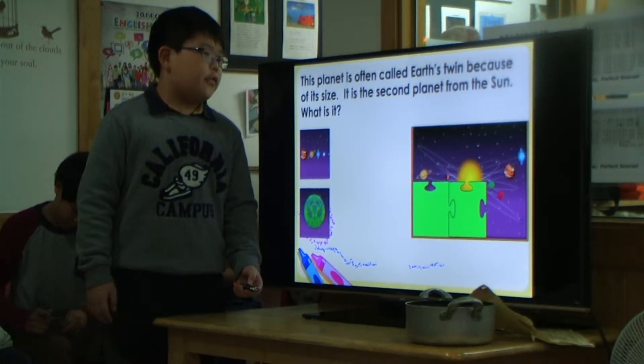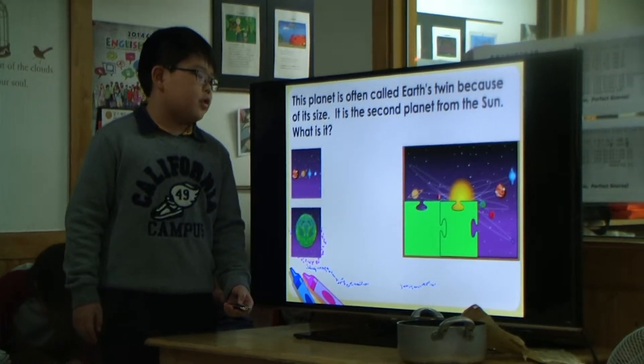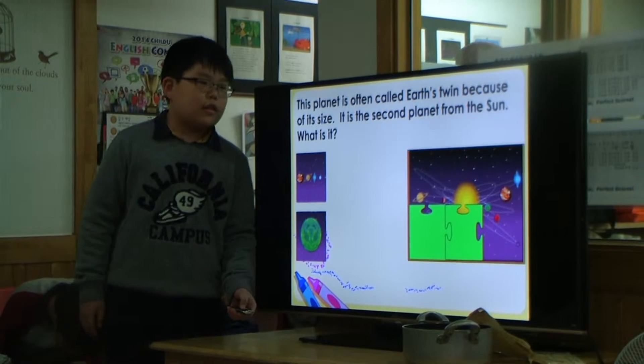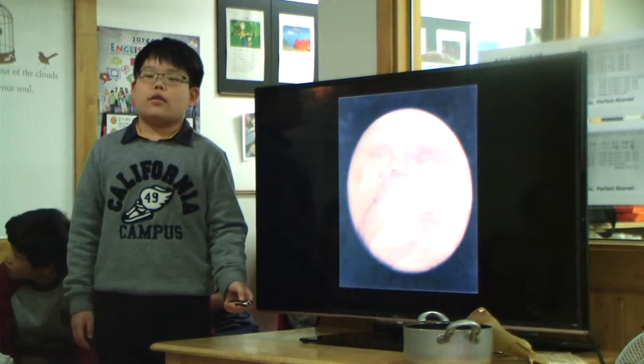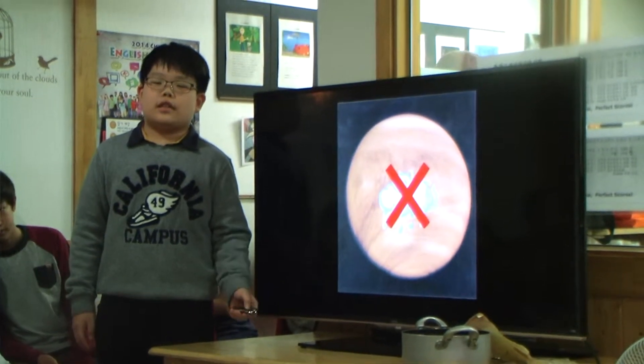This planet is often called Earth's twin because of its size. It is the second planet from the sun. What is it? Venus! Like Earth, clouds cover Venus, but these clouds aren't made of water. They are toxic.